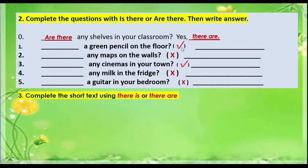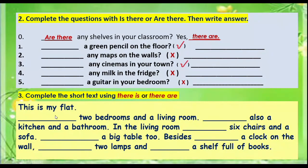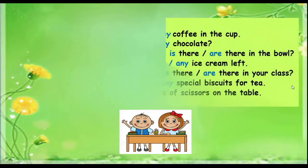Activity number three: complete the short text using 'there is' or 'there are'. For example: this is my flat — there are two bedrooms, and a living room, a kitchen, and a bathroom. You complete the short text using 'there is' for singular and 'there are' for plural.